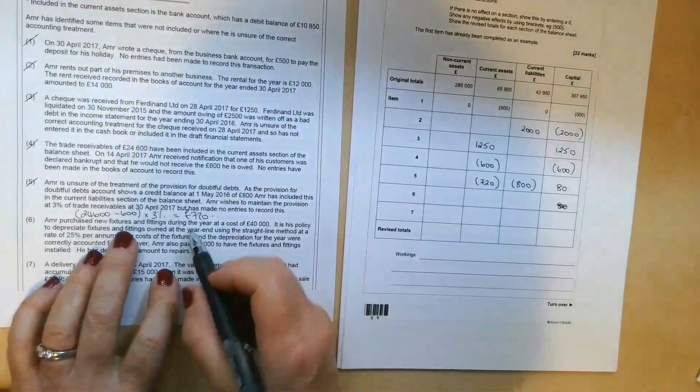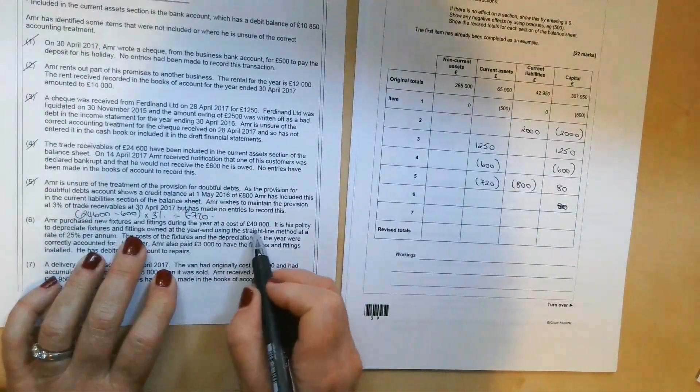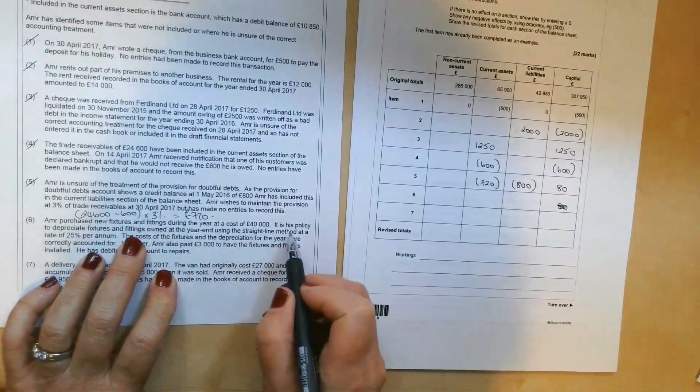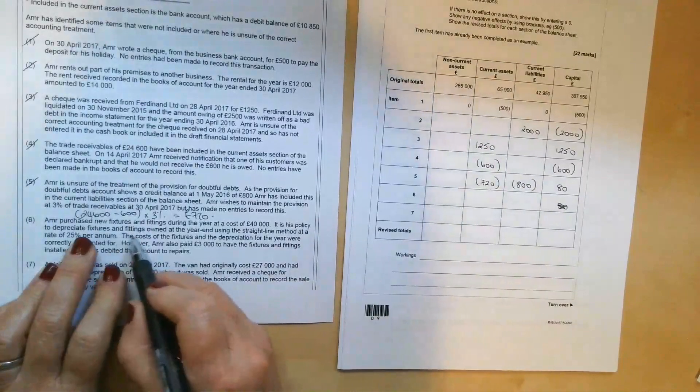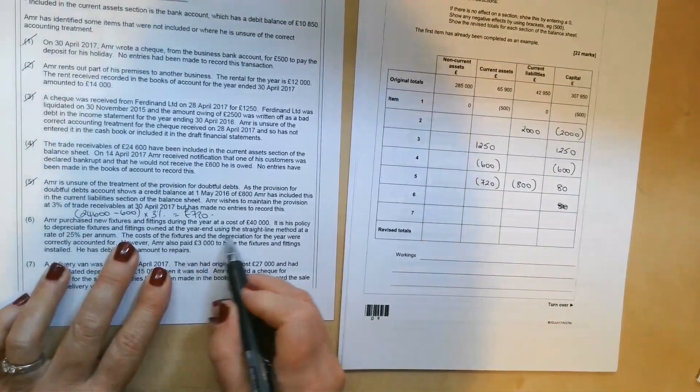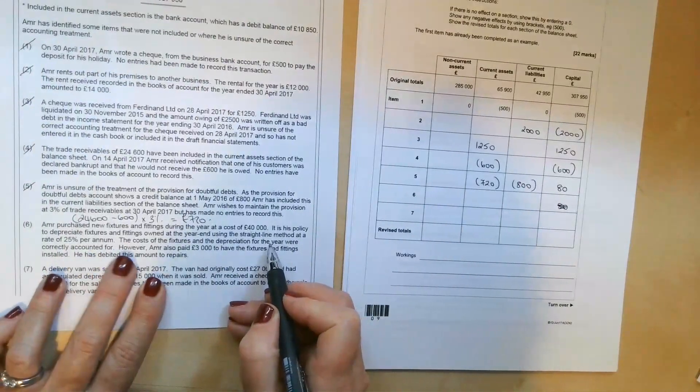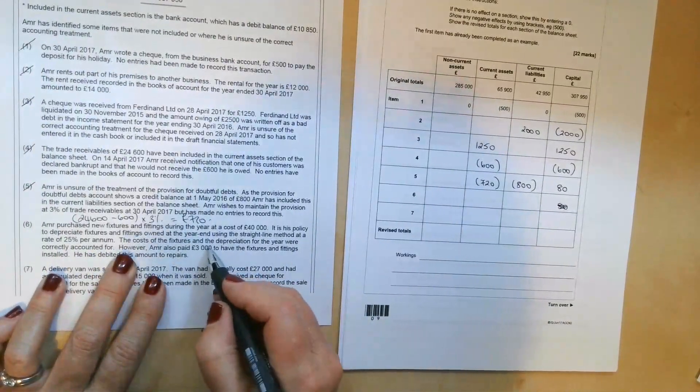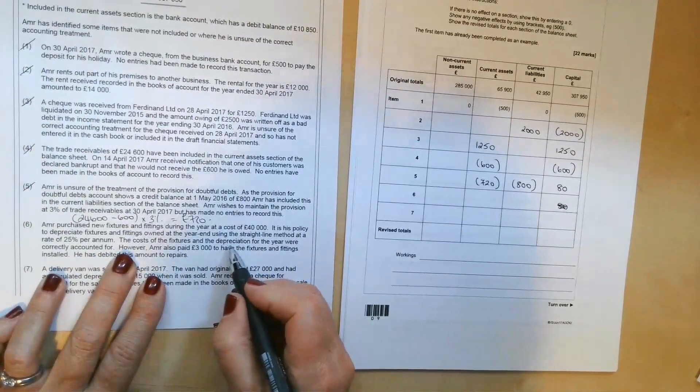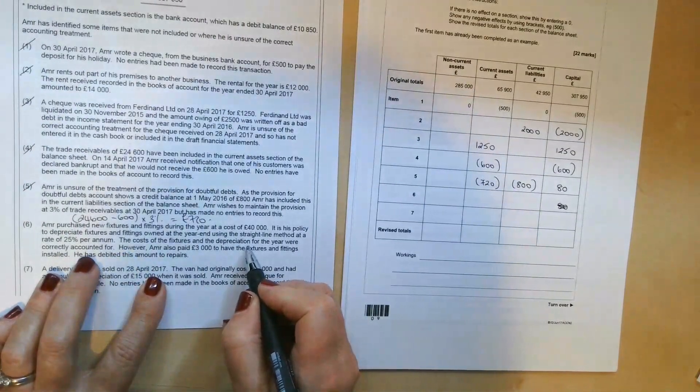Number six, Amir purchased new fixtures and fittings during the year at a cost of £40,000. It is his policy to depreciate fixtures and fittings owned at the end of the year using the straight line method at a rate of 25% per annum. The costs of the fixtures and fittings and the depreciation for the year were correctly accounted for.